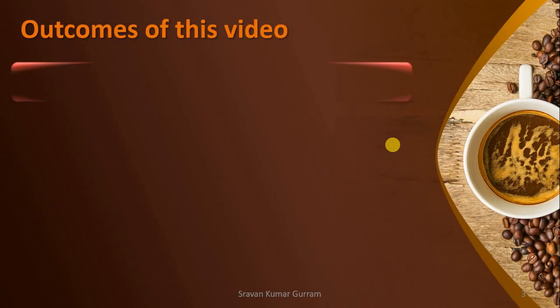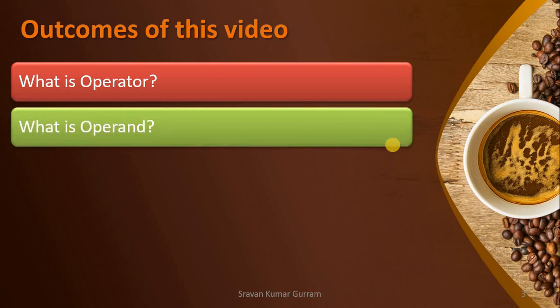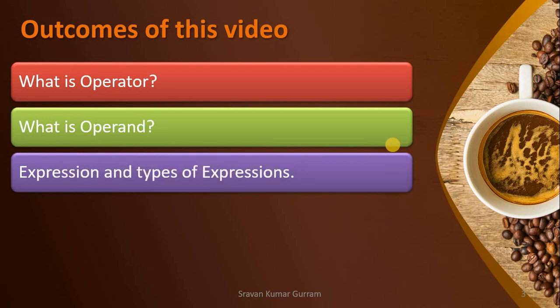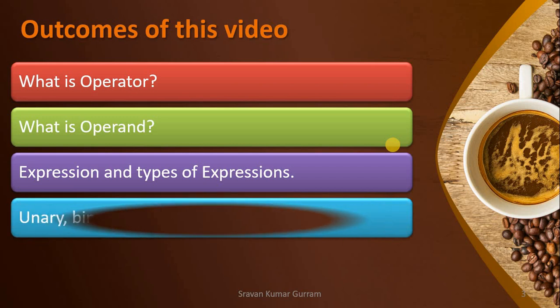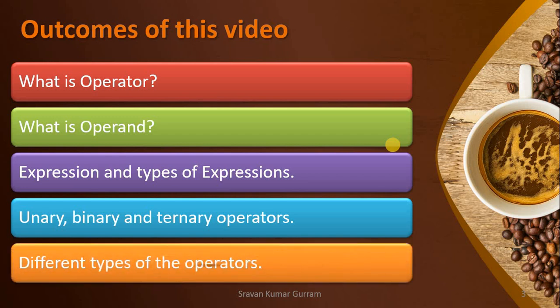After watching this video, you will get the idea about what is an operator, what is an operand, and we are going to discuss expressions and different types of expressions. We will discuss what is unary, binary, and ternary operator. After that, we are going to discuss different types of operators in Java.